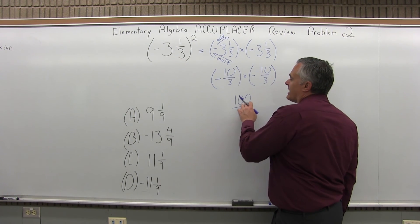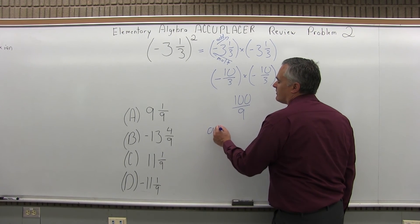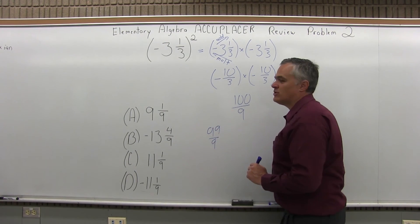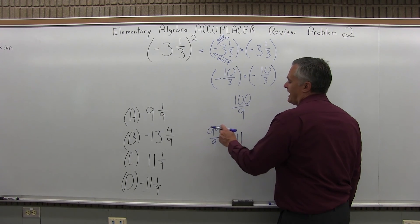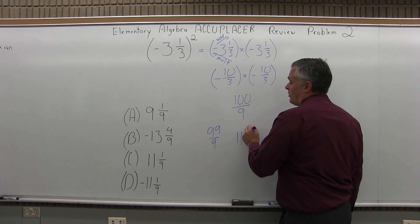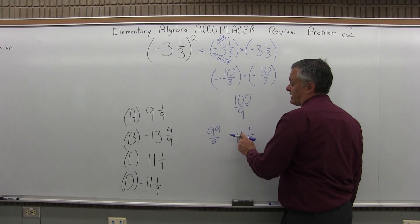So, 99 over 9 is pretty close to 100 over 9. And that's going to reduce to a nice whole number of 11. 99 over 9 reduces to 11. And now, if you have 99 over 9, there's one more ninth to make 100 over 9.